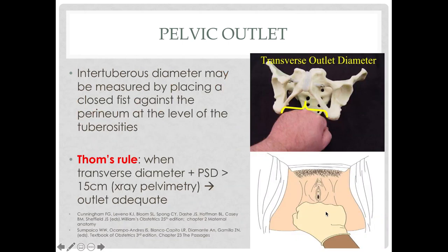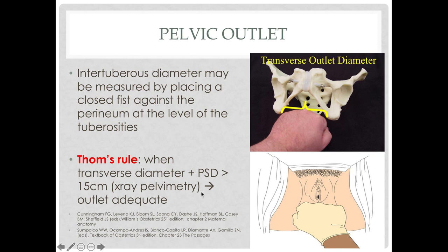To clinically assess the outlet, place a closed fist against the ischial tuberosities. If the intertuberous diameter accommodates four knuckle bones, the pelvic outlet is adequate. Thom's rule states that when the transverse diameter plus the posterior sagittal diameter is more than 15 centimeters — applicable only with x-ray pelvimetry — then the outlet is adequate.